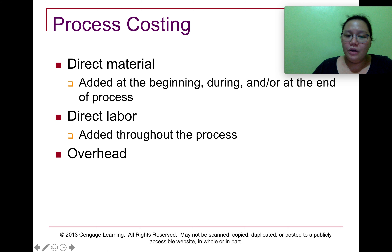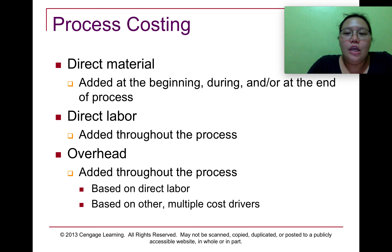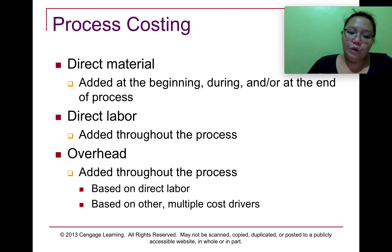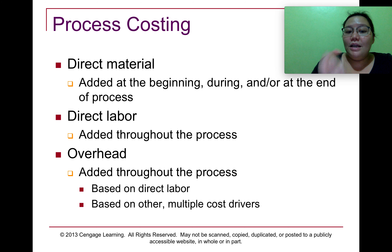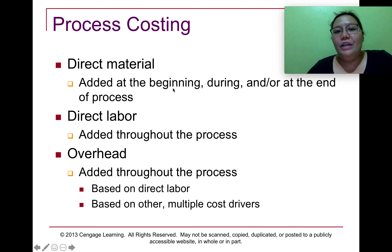Even in process costing, the product costs are still the same: direct materials, direct labor, and overhead. Direct materials may be added at the beginning, during, or at the end of the process. For example, in manufacturing candles, the main raw materials are the wick and the wax. The wick is added at the very beginning of the process because you cannot insert it after the hot wax has hardened. The wax is also poured in shortly after.